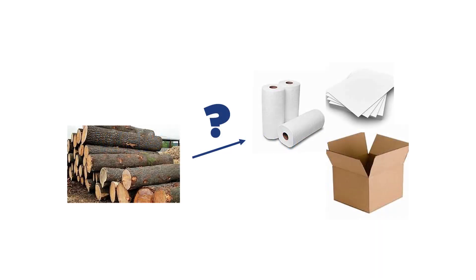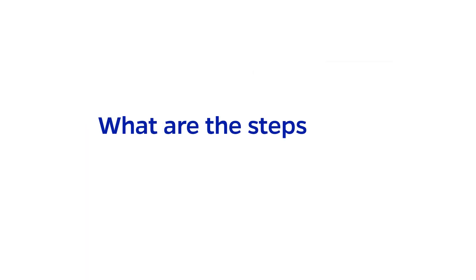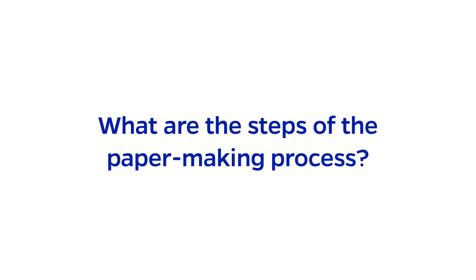Take the process to make paper products, for example. Most people probably know that paper comes from wood, but how does a rigid, thick, brown, heavy log become soft, white, thin, flexible paper? Try to imagine the key steps involved in this process.